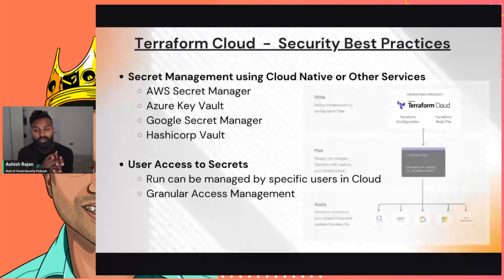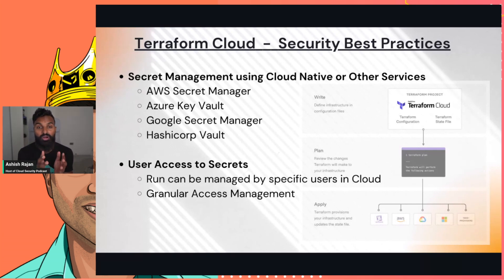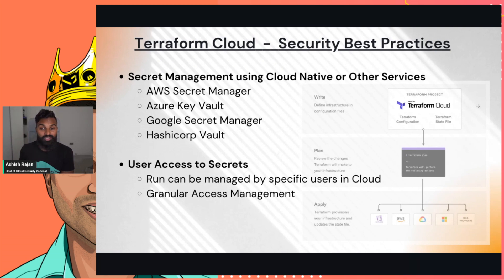But you don't have to just rely on native Terraform Cloud features — you can also be cloud-native. You could use things like AWS Secret Manager, Azure Key Vault, Google Secret Manager, or even HashiCorp Vault, which is also free to an extent. If you've been doing CloudFormation on AWS for a long time, you can use those existing Secret Manager services to manage secrets, and you can still have granular-level access control for who can access secrets in those locations.